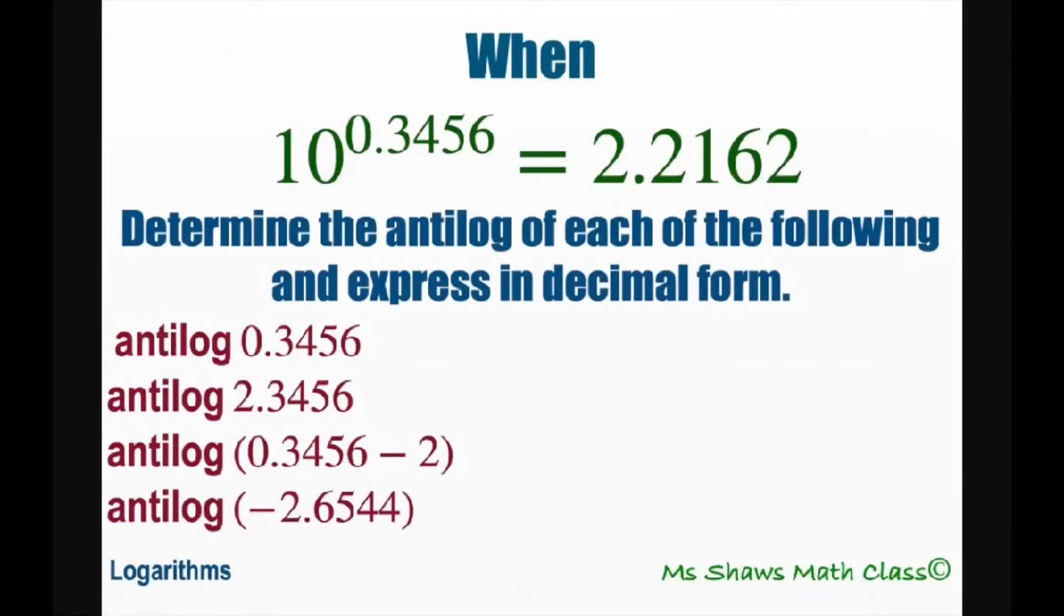Hi, everyone. When 10 to the power of 0.3456 equals 2.2162, we're going to determine the antilog of each of the following and express in decimal form.